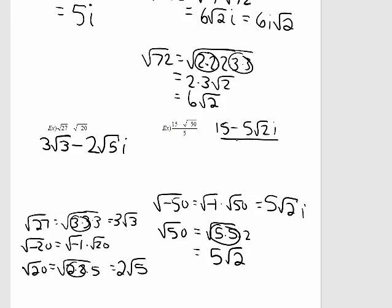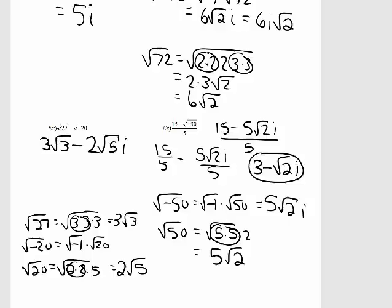I want to pull out the perfect roots of the square root of negative 50. As a reminder, I cannot divide out a 5 from just some terms — it has to be from every single term. When I pull out the perfect roots of negative 50, I get 5 times the square root of 2 times i. Now, every single one of these terms I can divide out by 5. So 15 divided by 5 is 3, and 5 divided by 5 is 1, leaving me with the square root of 2 times i.